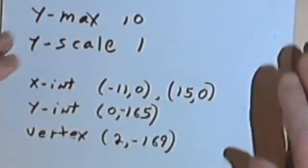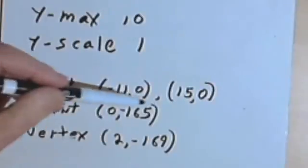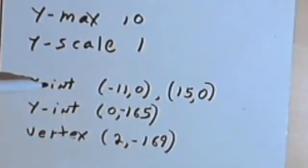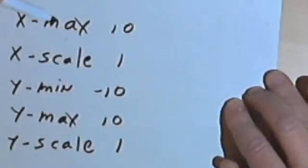Now remember, these were the points I wanted to make sure I included in my graph. I wanted to make sure I included the x-intercept, the y-intercept and the vertex. So here's what all those min and max values are about.